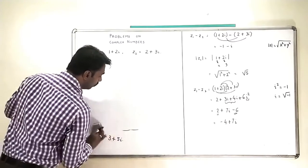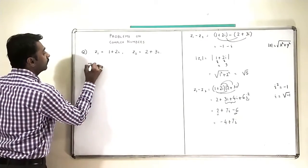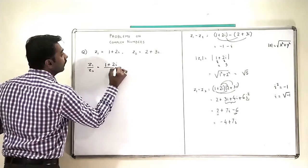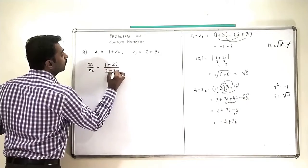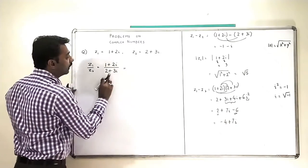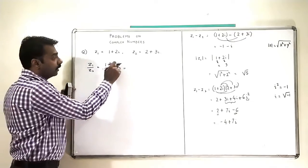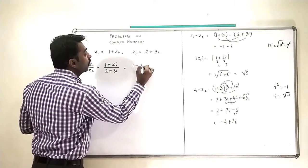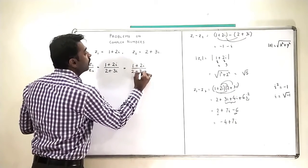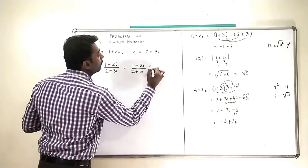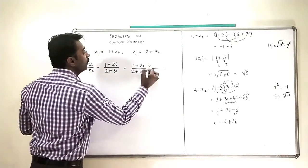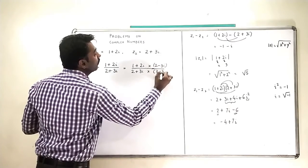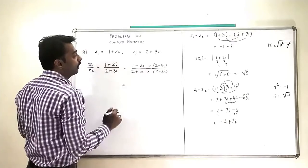So Z1 upon Z2 is 1 plus 2i divided by 2 plus 3i. This I will multiply the numerator and denominator by the conjugate of the denominator. So I will have 1 plus 2i upon 2 plus 3i, multiplied by 2 minus 3i. And we know how to multiply them now.